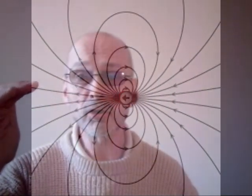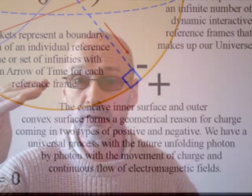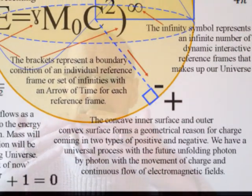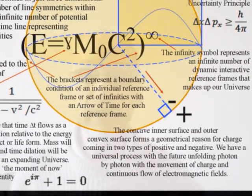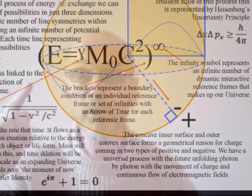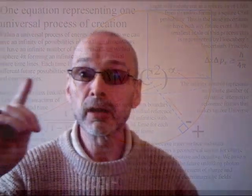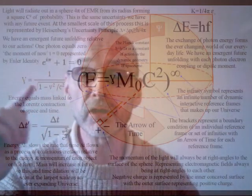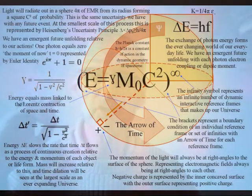The inner concave surface can form a geometrical reason for negative charge, with the outer convex surface representing positive charge. In this way, we can have use of the holographic principle, with the information of our three dimensions encoded on a dynamic, two-dimensional boundary condition formed by the movement of positive and negative charge.